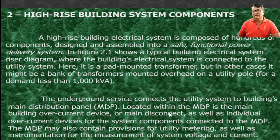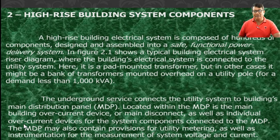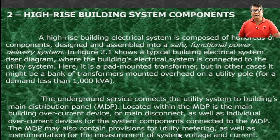The MDP — main distribution panel — is the key distribution point. Located within the MDP is the main building overcurrent service or main disconnect, including individual overcurrent devices. When we see overcurrent devices, we have two types: fuses or circuit breakers. The MDP may also contain provisions for utility metering — the mother meter used by distribution utilities for a single metering point.